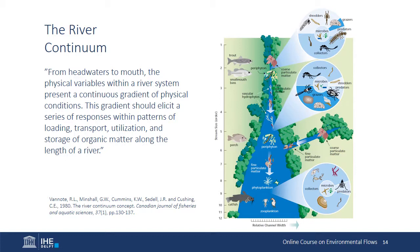Collectors are still significant, as they're feeding on all forms of particulate matter — fine particulate matter in particular — that's being transported by the flowing river. Finally, in the lower reaches of rivers, which often become deeper and more turbid, collectors dominate because the main source of basal energy is fine particulate organic matter transported from upstream. This is an idealized concept of rivers, and there's great variety in individual rivers around the world. But it reminds us of the importance of maintaining upstream-downstream connections in our management of rivers, because communities of organisms at any point in the river may be more or less dependent on upstream processes.